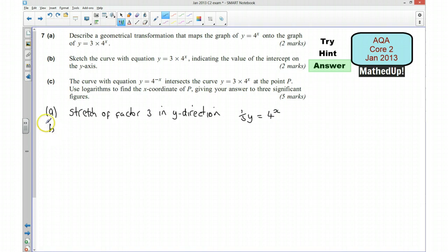OK, part B. We are sketching the curve with this equation, and we are going to indicate the value of the intercept on the y-axis. So first of all, the general shape of this curve is going to look like this.